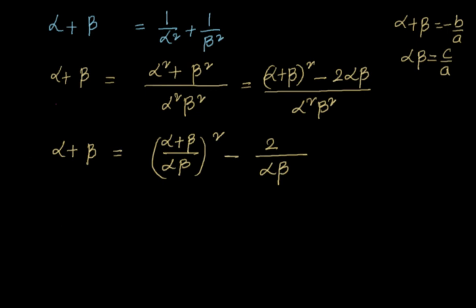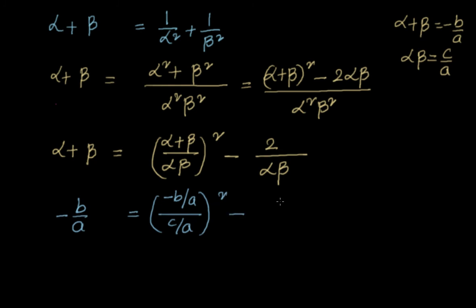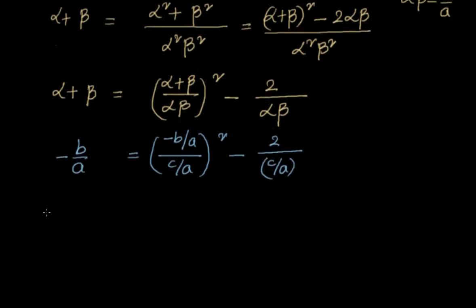Now substituting: α + β = −b/a and αβ = c/a. So (α + β)/αβ = (−b/a)/(c/a) = −b/c. This whole expression is squared, then minus 2/(c/a), which is 2a/c. Simplifying gives: −b/a = b²/c² − 2a/c.